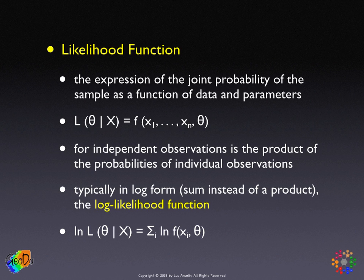In typical notation, the log of L, the likelihood function, is the sum over i — the sum over all observations — of the log of the probability density function for that particular observation as a function of the parameters. Estimation by maximum likelihood is essentially an optimization problem: find the parameter values that maximize this log likelihood.